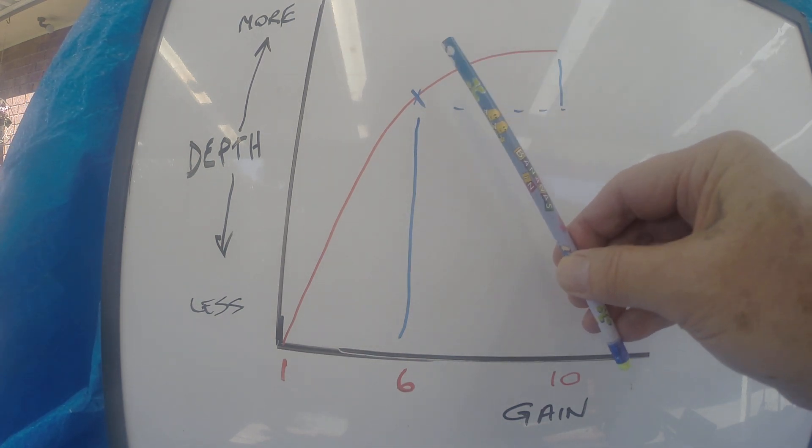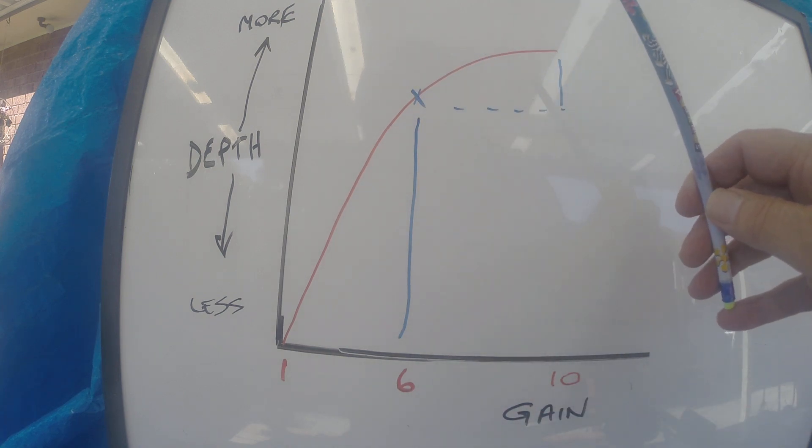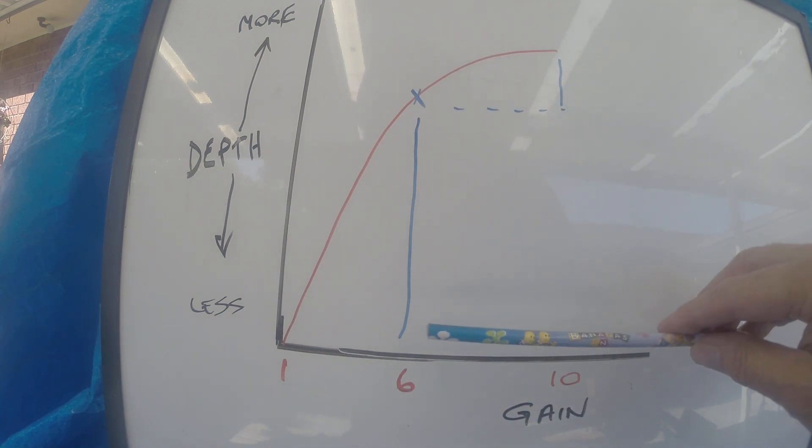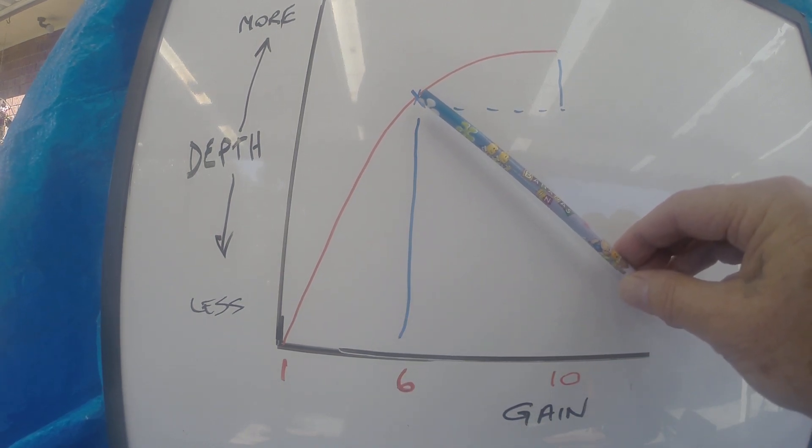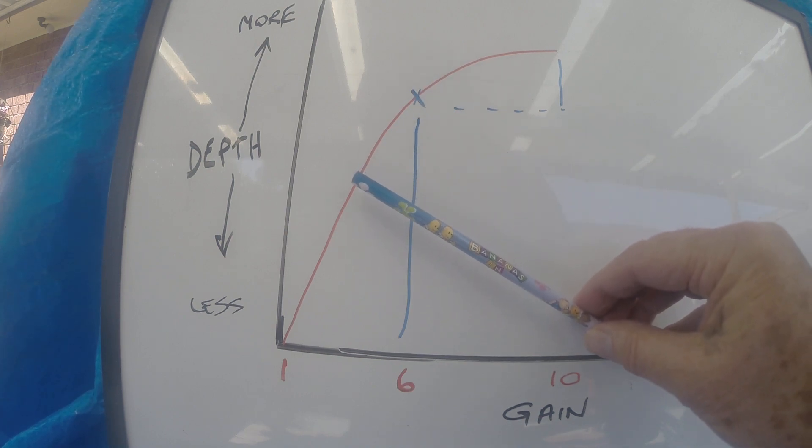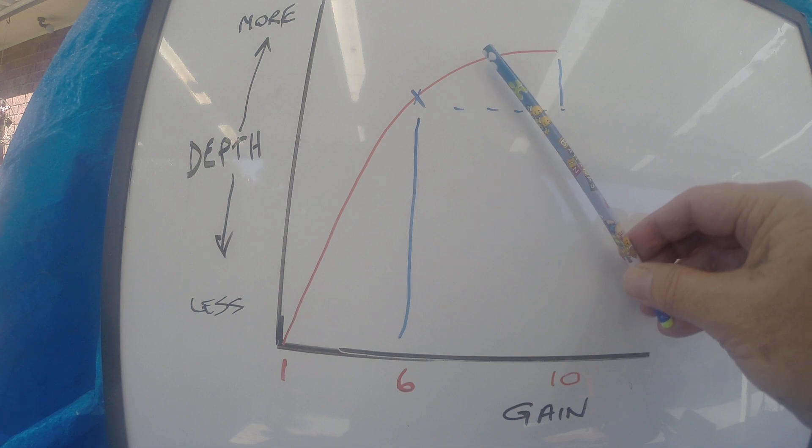So the way I do it - I generally, you can do it two ways. I generally set my gain straight to 6, do my ground balance and do everything else from there, and then back it off if I need to and increase it if I can.